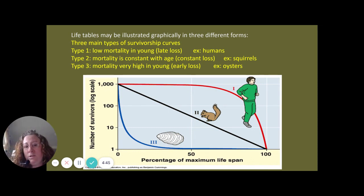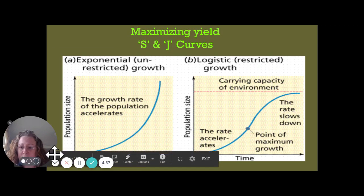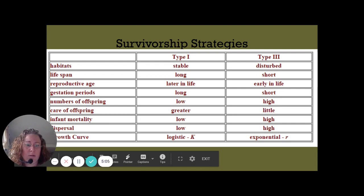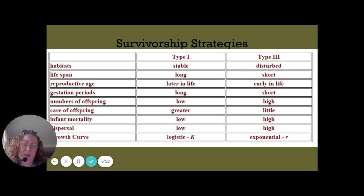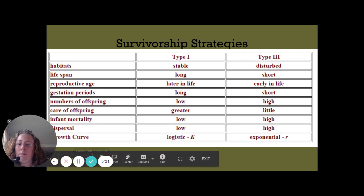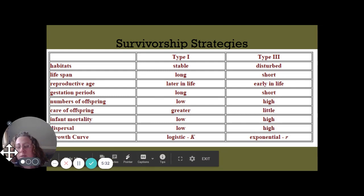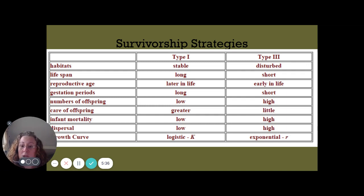Those are our three types of survivorship graphs, often determined by looking at life tables. We've tried to generalize what life tables can fit into by calling them low mortality of young, independent of age mortality, and high mortality of young. The next slide covers survivorship strategies, showing type 1 and type 3 survivorships. Type 2 is harder to study since it's independent of age, so when we look at survivorship strategies, we tend to exclude type 2.